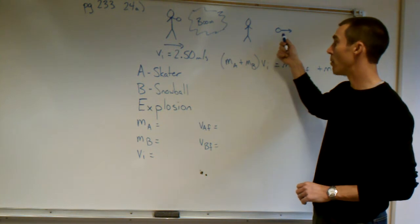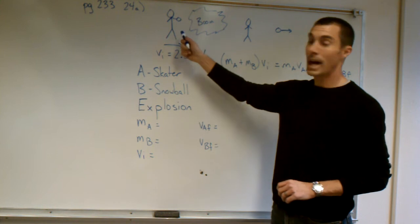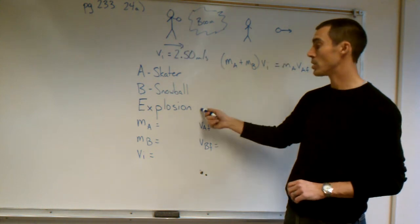the skater moves, the snowball moves. We have A as the skater, B as the snowball. We have one object turning into two objects, which is an explosion.